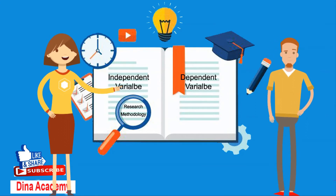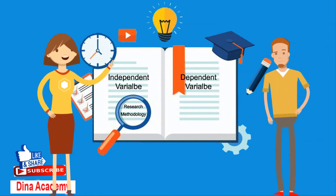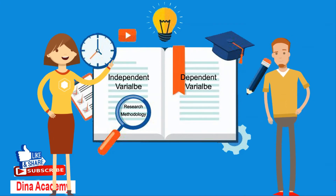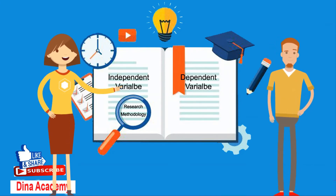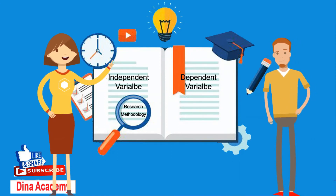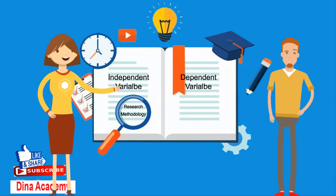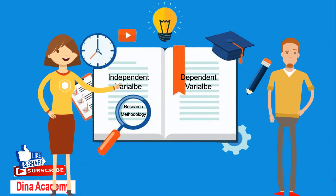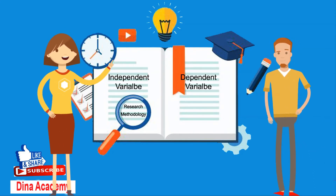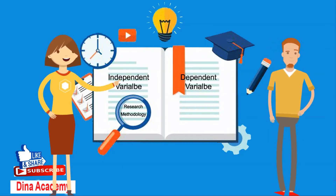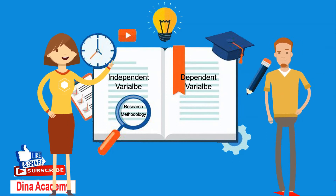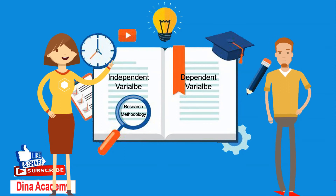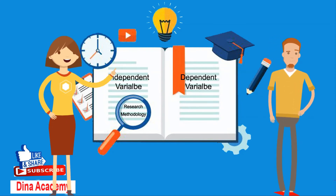Several people have a problem remembering which is the independent variable (IV) and which is the dependent variable (DV). An easy way to remember is to insert the names of the two variables you are using in a sentence in a way that makes the most sense. Then you can figure out which is the independent variable and which is the dependent variable.